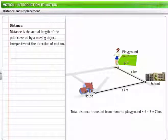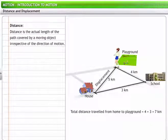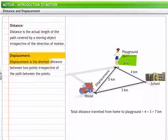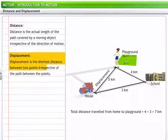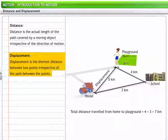The distance is the actual length of the path covered by a moving object irrespective of the direction of motion. Mary goes from home to the playground. The distance from home to the playground is only about five kilometers long. Therefore, Mary's displacement from home to the playground is five kilometers, as against the distance covered of seven kilometers. Thus, displacement is the shortest distance between two points irrespective of the path between the points.